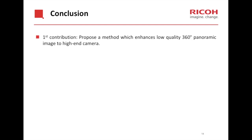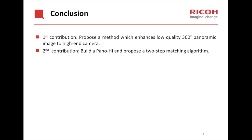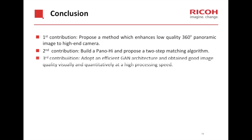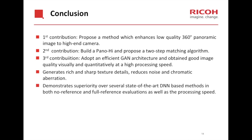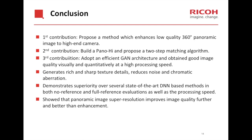Finally, we conclude our work. We have three contributions. First, we propose a method which enhances low-quality 360-degree panoramic images to the high-end camera level. Second, we build a panoramic high-end dataset and propose a two-step matching algorithm. Third, we adopt an efficient GAN architecture and obtain good image quality visually and quantitatively at high processing speed, generating rich and sharp texture details while reducing noise and chromatic aberration. We also demonstrate superiority over several state-of-the-art GAN-based methods in both no-reference and full-reference evaluations as well as processing speed. Finally, panoramic image super-resolution improves image quality further beyond enhancement. Thank you very much.